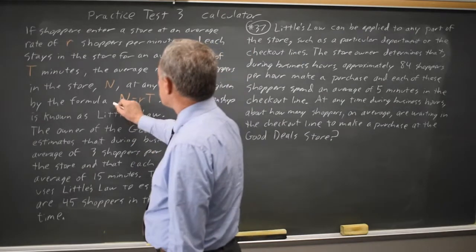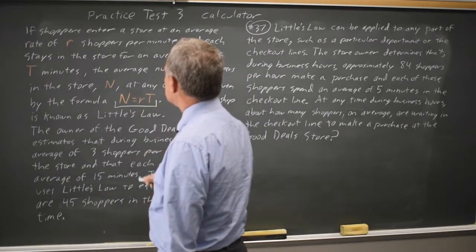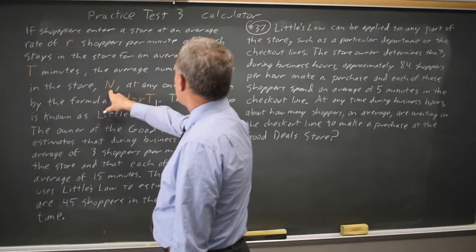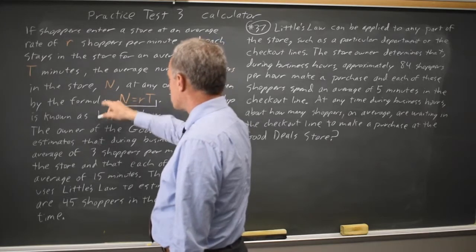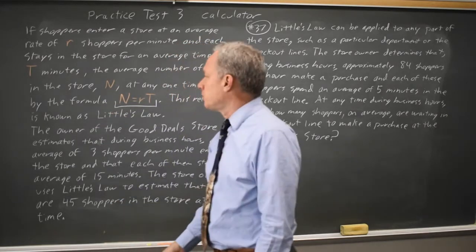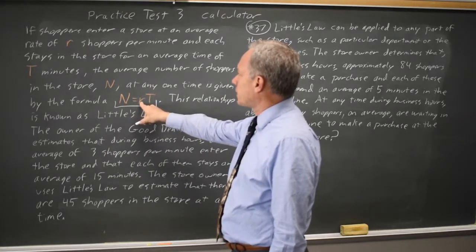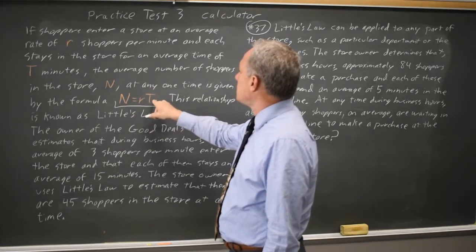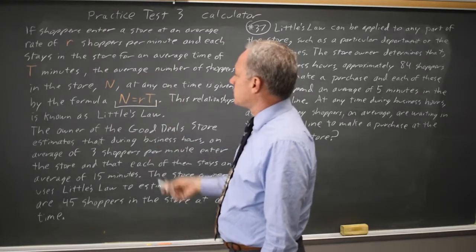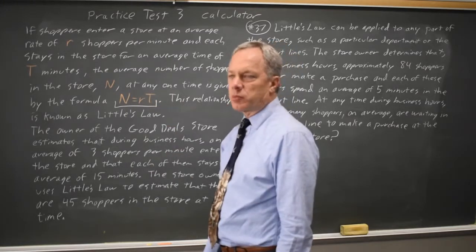The important part is the formula n equals rt, where n is the average number of shoppers in the store or in any portion of the store, r is the rate that shoppers enter per minute, and t is the average time they spend in that store or that portion of the store.